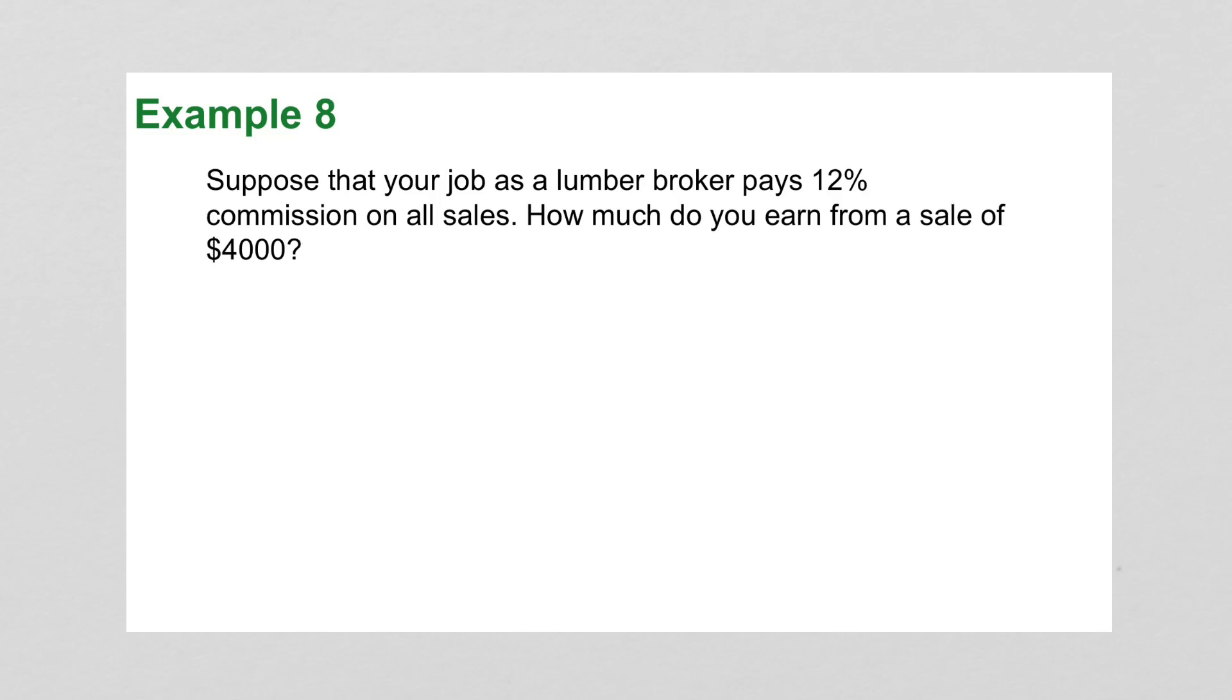For example 8, it says, suppose your job as a lumber broker pays 12% commission on all sales. How much do you earn from a sale of $4,000? So the commission that you earn will go on the top, and the sales price on the bottom. And you've got 12 out of 100. So again, we're going to cross multiply, divide by 100, and you would gain $480 from this sale.